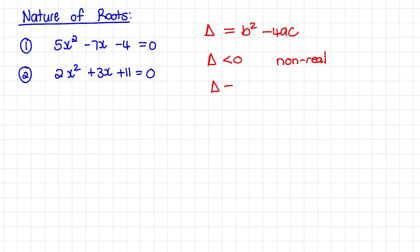When we find that delta is equal to 0, we say that we have one root or equal roots.